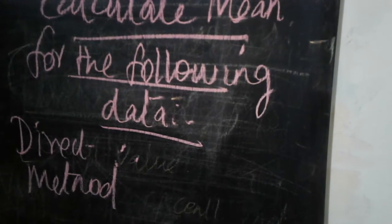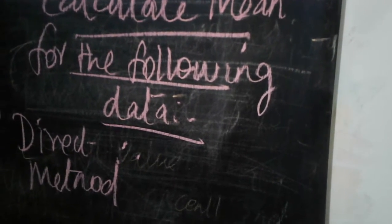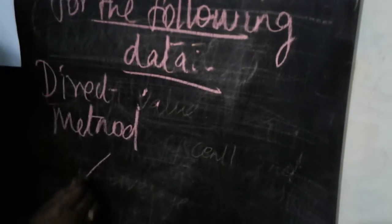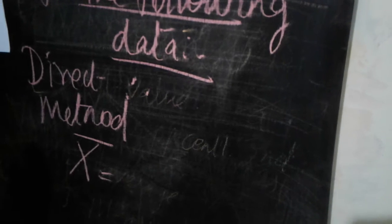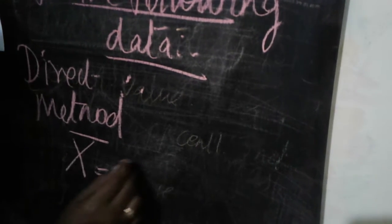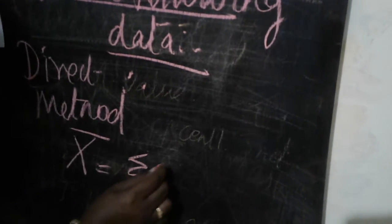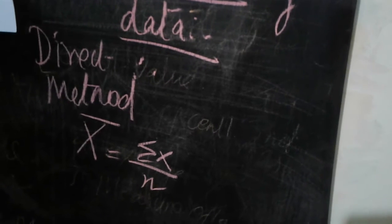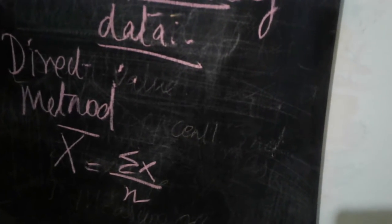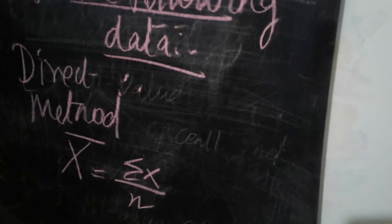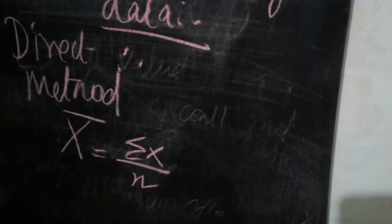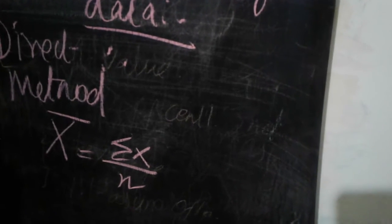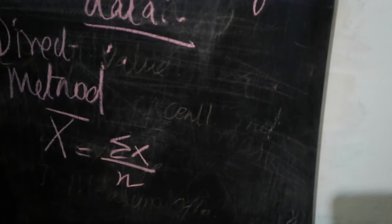The first method we are going to discuss today is the direct method. The formula for calculation of mean using the direct method is very important — listen carefully. x-bar equals sigma x divided by n. That is the direct method formula.